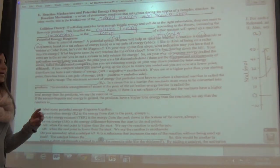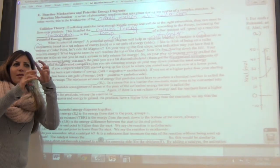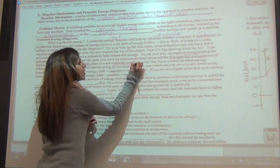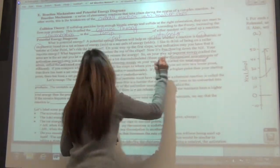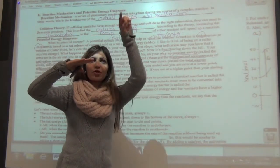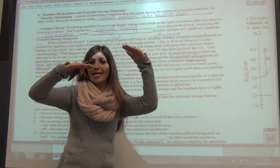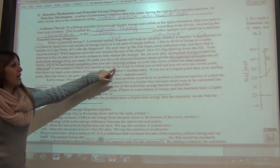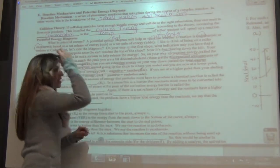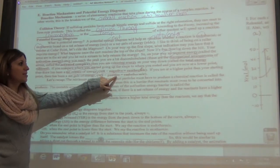The activated complex is at the top, where the atoms don't know what they're doing yet — they're unsure if they're going to form products or come back and form reactants. Then you get a release of energy on your way down — we call this the total energy release. If you compare where you started and where you end up, that tells you whether you have a net energy gain or release. If you end at a lower point, there's been a net release of energy — delta H is negative, that's exothermic. If you're at a higher point than your starting point, delta H is positive — that's endothermic.